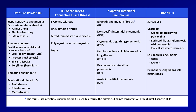While we have all the etiologies on the screen at once, let me label those which are observed almost solely in current or past smokers, which includes RBILD, DIP, and pulmonary Langerhans cell histiocytosis.